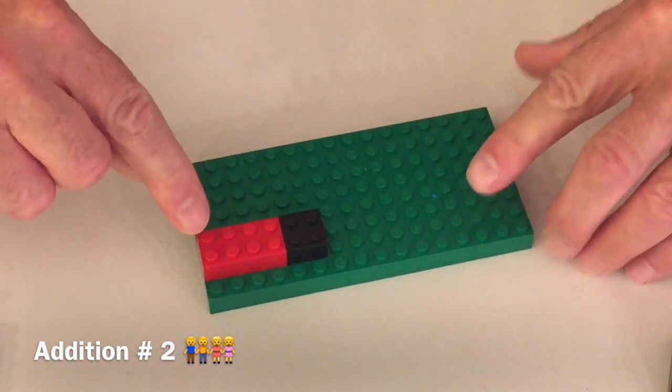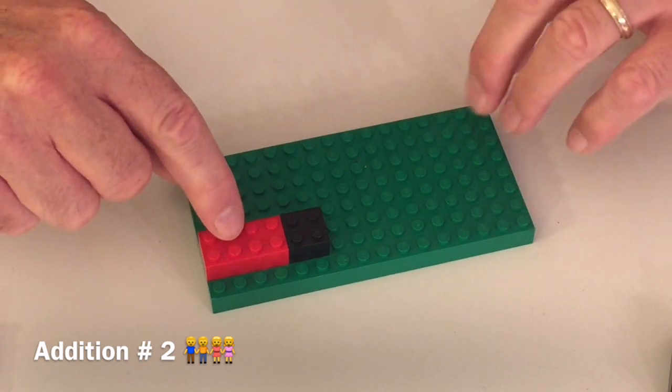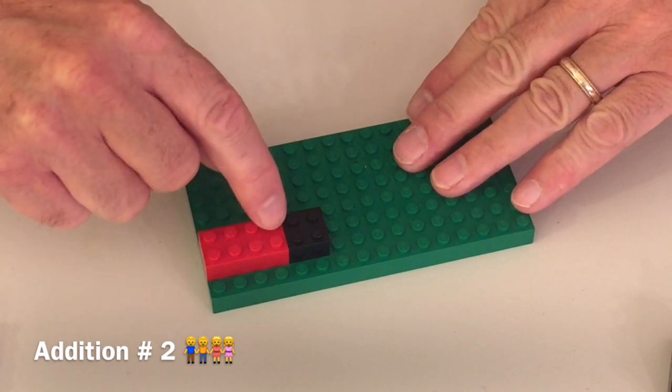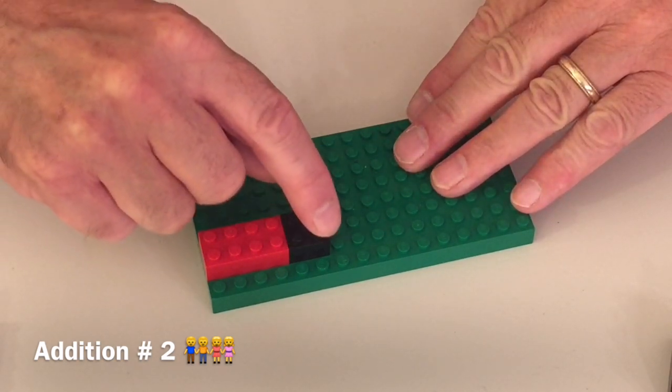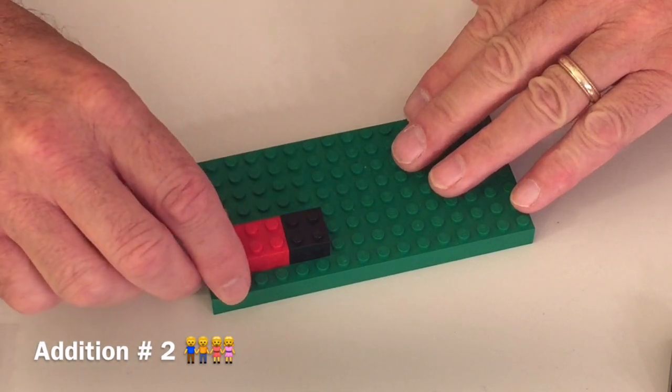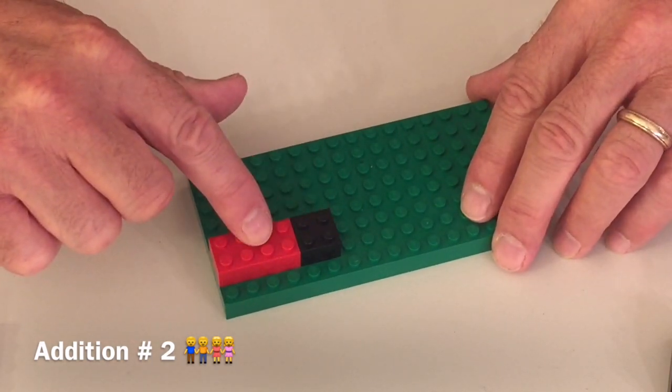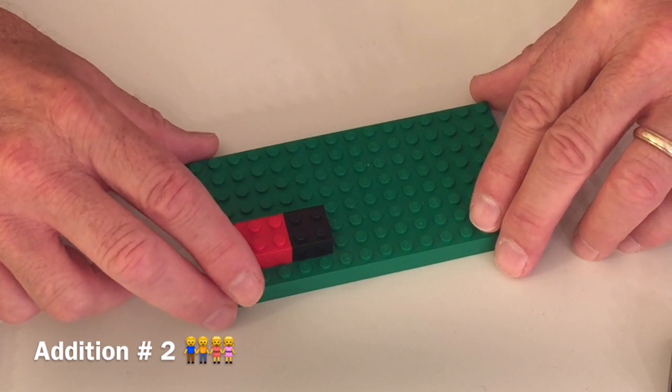Let's count them up and see. One, two, three, four, five, six, seven, eight, nine, ten, eleven, twelve. So four plus eight is twelve. Nice job.